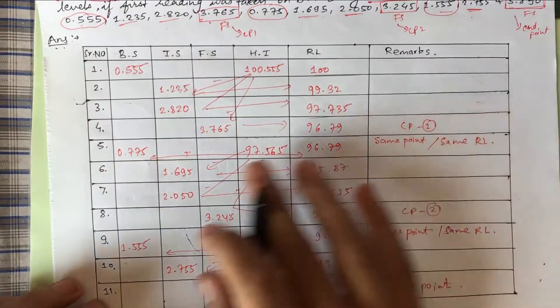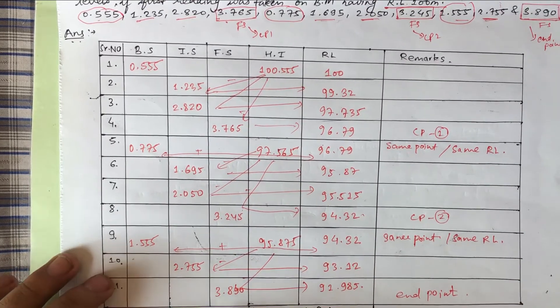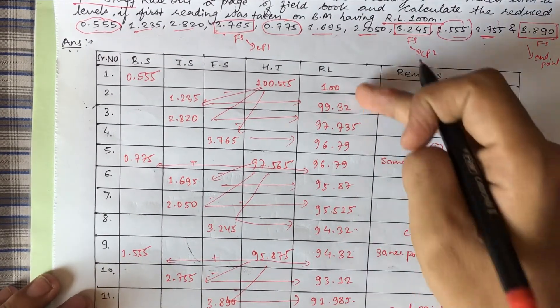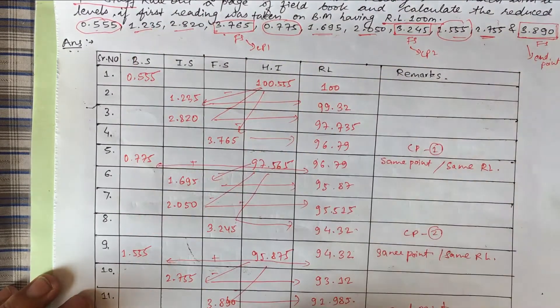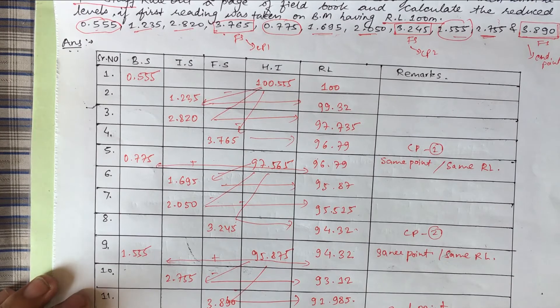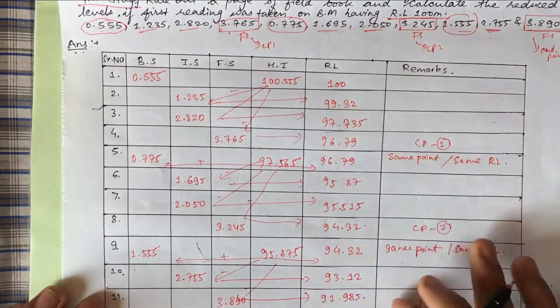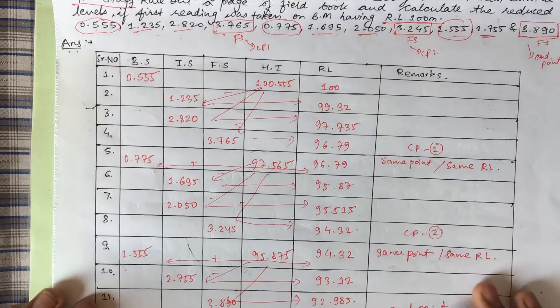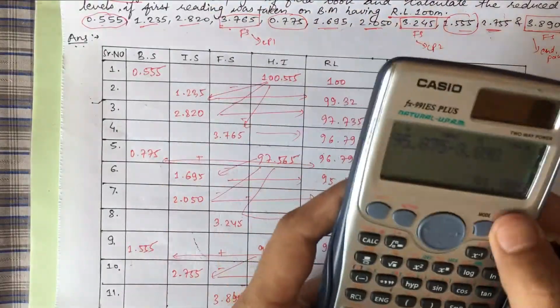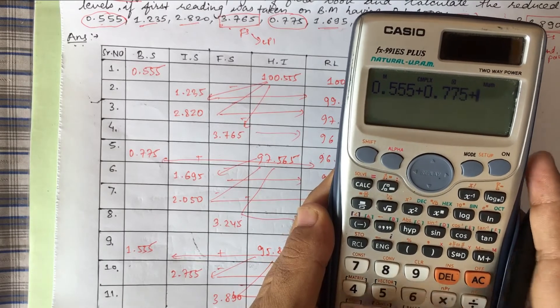Now our problem is over. We just have to check. For checking, we use a simple formula: summation BS minus summation FS equals last RL minus first RL. This is the last RL, this is the first RL. We add all BS and write summation BS. We add all FS and write summation FS. If the condition is satisfied, our problem is correct.